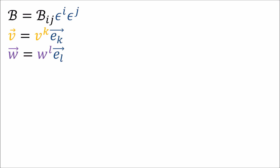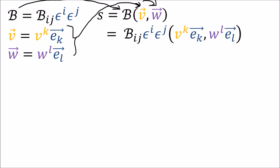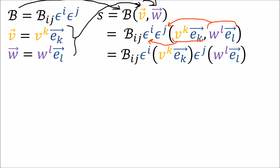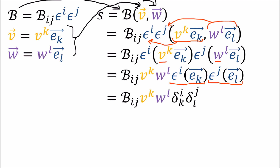Next, we can get the correct component multiplication formula when a bilinear form acts on two vector inputs. We replace the bilinear form and the vectors with their linear combination expansions in some basis. Then we pass each vector input to its corresponding covector — the first vector to the first covector, and the second vector to the second covector. By linearity of covectors these come out in front, they become Kronecker deltas, and by the index cancellation rules we get the correct component multiplication formula, which yields a single number as the result.